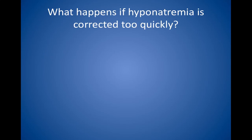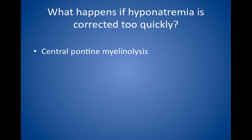What happens if hyponatremia is corrected too quickly? Overly quick correction may cause brainstem damage, so-called central pontine myelinolysis. Hypertonic saline is used only when a patient has seizures from severe hyponatremia, and even then, only briefly and cautiously. Normal saline is a better choice 99% of the time for board purposes. In chronic severe symptomatic hyponatremia, the rate of correction should not exceed 0.5 to 1 milliequivalent per liter per hour of sodium.